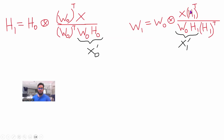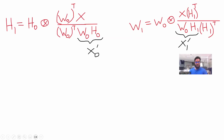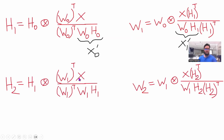W0 and H1 together give X1' — another approximation of X. If X1' equals X, W0 would not change. This is a multiplicative update, and we can repeat it. In iteration 2, we use H1 and W1 to get H2 and W2. We keep doing this until we converge — meaning the Frobenius norm error is very small — or until we have reached a certain number of iterations and don't want to continue anymore.